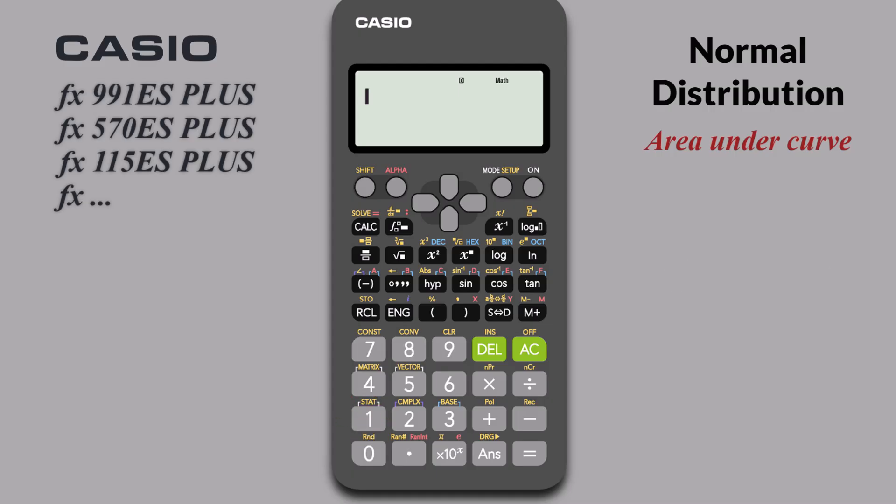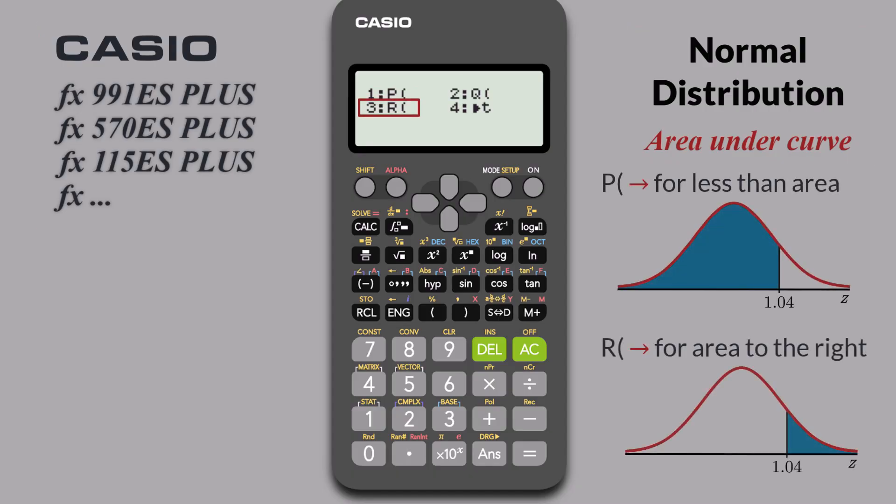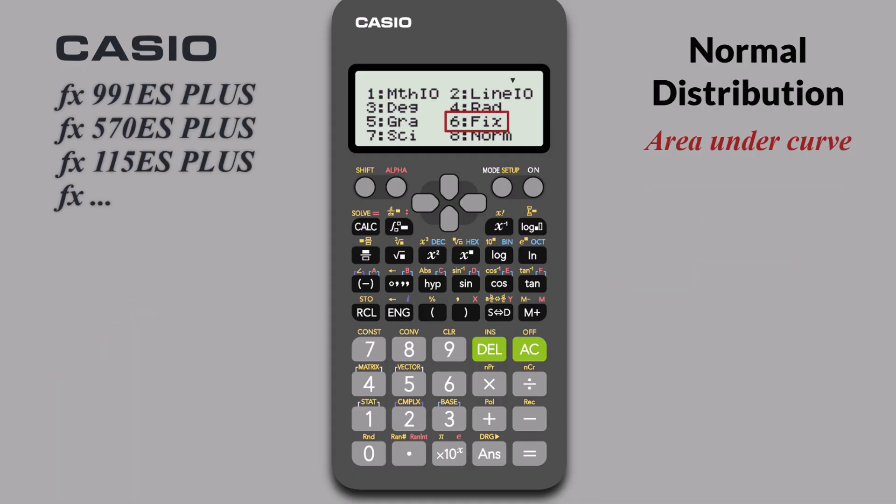And that's it. You've just learned how to use the Casio FX ES Plus Series Calculator to quickly compute normal distribution probabilities. Remember the key functions. P is for less than area. R is for area to the right. Q is for area to the mean. You also saw how to use the FIX function to format your results neatly to 4 decimal places. Thanks.